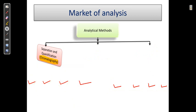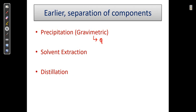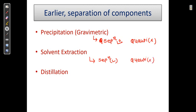We know that precipitation is used for separation only, not for quantification. Solvent extraction is also for separation, not quantification. Distillation is also for separation, not for quantification. But chromatography has a dual advantage — it is used for both separation and quantification.